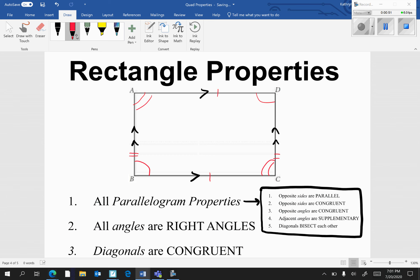Adjacent angles are supplementary. Remember, supplementary means they add to 180 degrees. So angle A plus angle B equals 180, and angle D plus angle C equals 180 degrees.